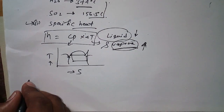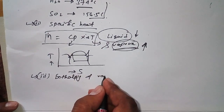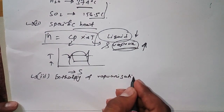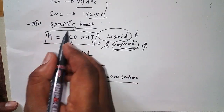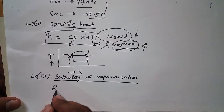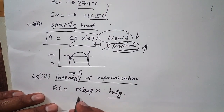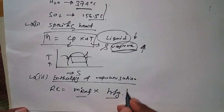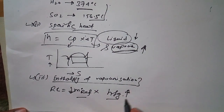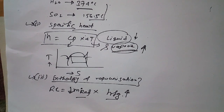Now moving to the next thermodynamic property — enthalpy of vaporization. Enthalpy of vaporization should be as high as possible, because a higher value requires a smaller mass flow rate of refrigerant for the same capacity. Refrigerant capacity equals mass flow rate of refrigerant multiplied by hfg. If hfg is higher, the required mass flow rate (kg/s) will be lower.